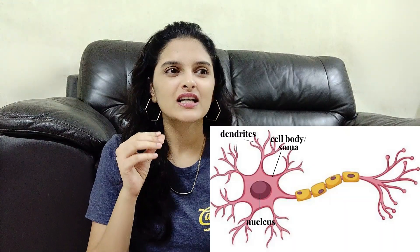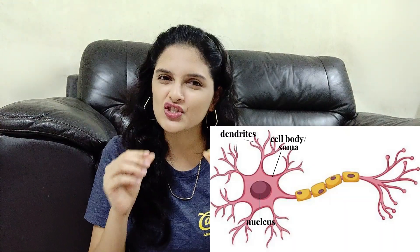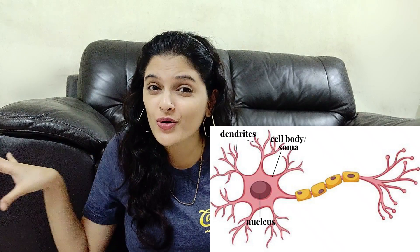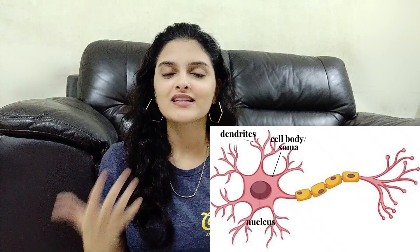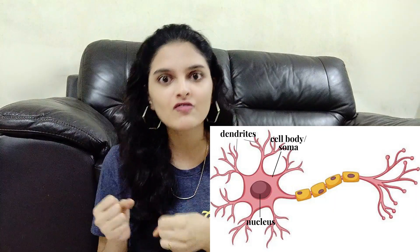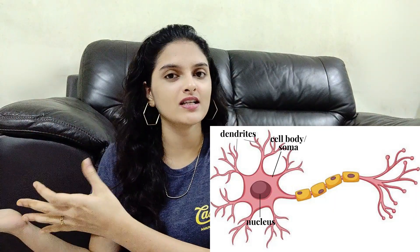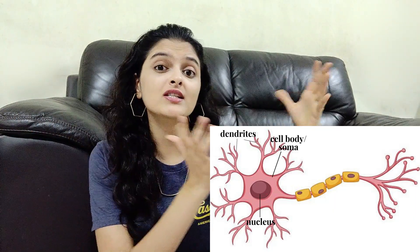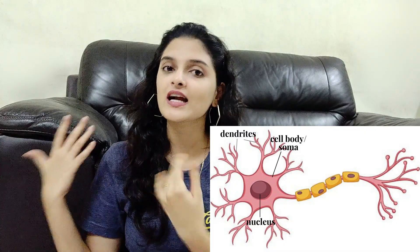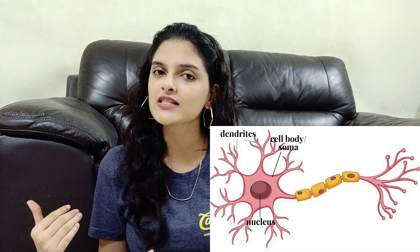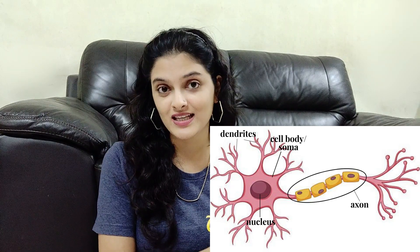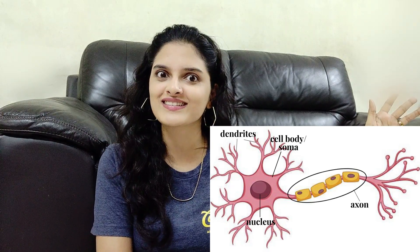Dendrites are these thin structures like fibers branching out of the cell body. Dendrites are like receivers — they receive messages from the other neurons they are connected to and pass it on to the cell body. On one side there are dendrites to receive messages, and on the other side you have axons that send these messages.